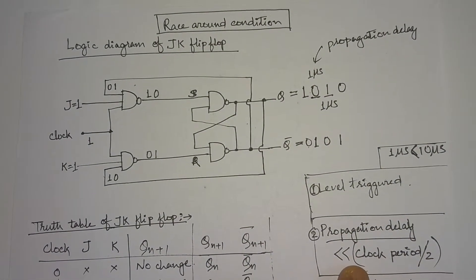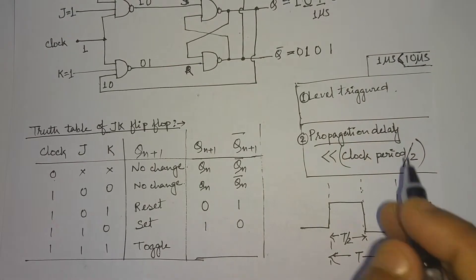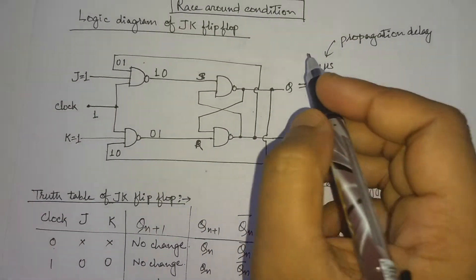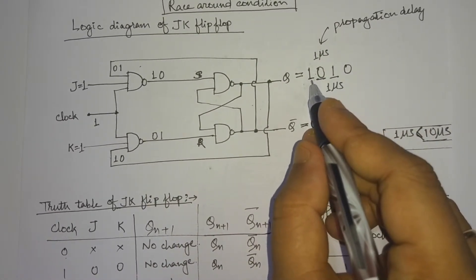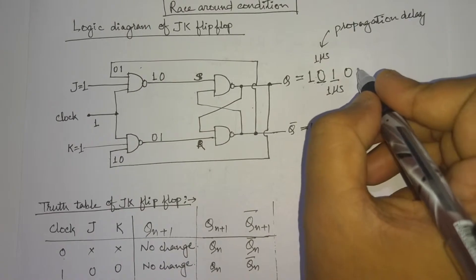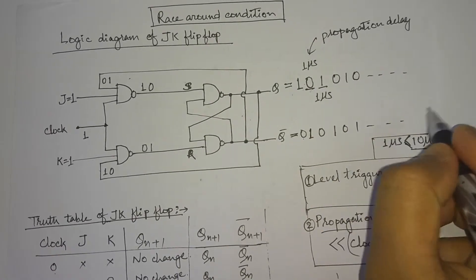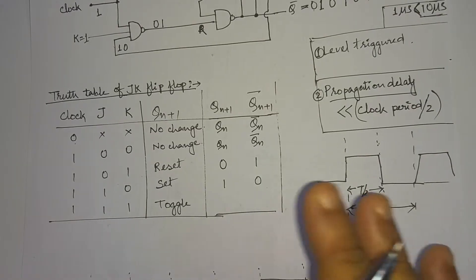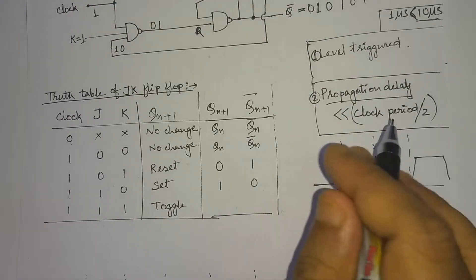During the high duration of the clock period — 10 microseconds in our example — the output toggles between 0 and 1. If the present state output is 1, the next state is 0; if present state is 0, the next state is 1, and so on. Whenever the clock level is high with J=K=1, the output switches between 0 and 1.